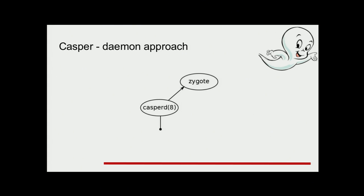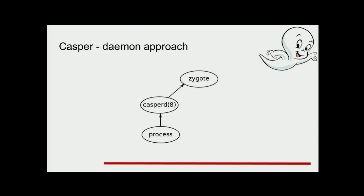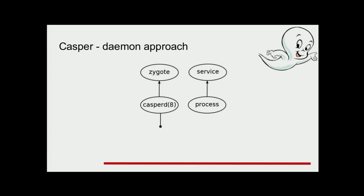The approach was that Casper-d would start with the operating system. It would first fork to create a so-called zygote — a very lightweight process that didn't use a lot of memory and didn't have open descriptors, designed to be very quickly forked again. If a process needed some services, it would connect to Casper via Unix domain socket and ask for services. Casper would then fork the zygote and transform one of those zygotes into the service, then pass the service to the process while Casper waited for another process to connect and ask for another service.